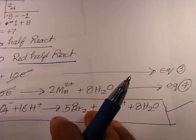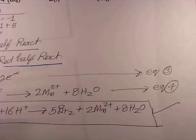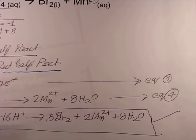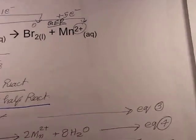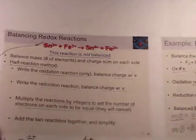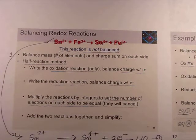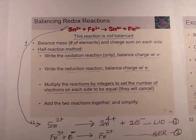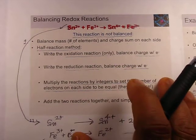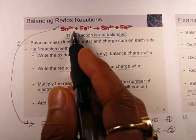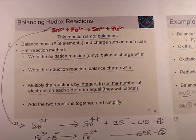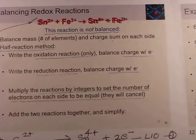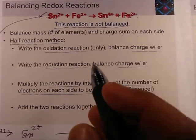This was another example of balancing a redox equation in acidic condition. Now we will see one more example to balance the equation: Sn²⁺ + Fe³⁺ → Sn⁴⁺ + Fe²⁺. This reaction is not balanced, and we are going to balance it. Once again, it is very simple.